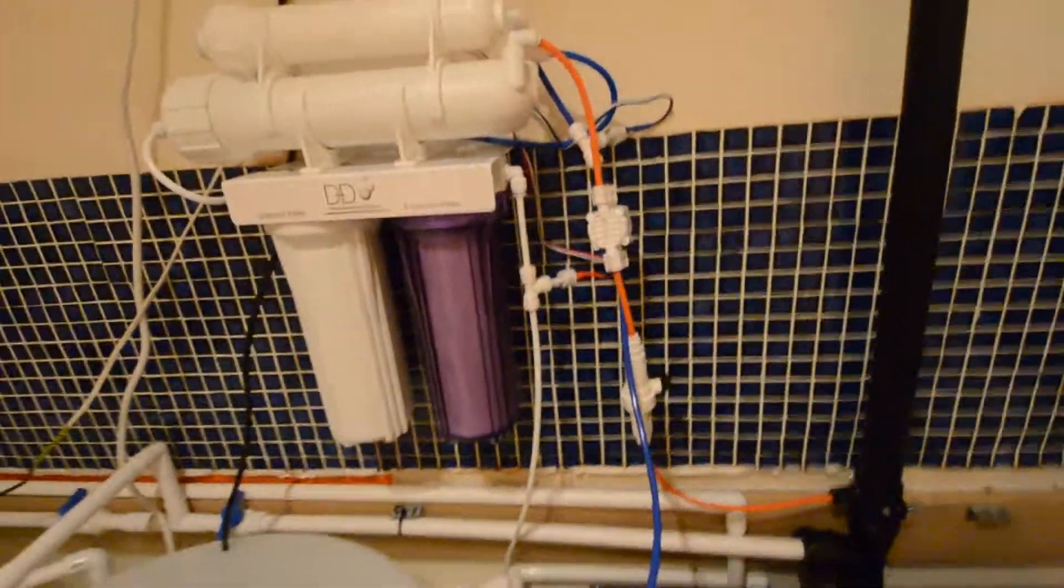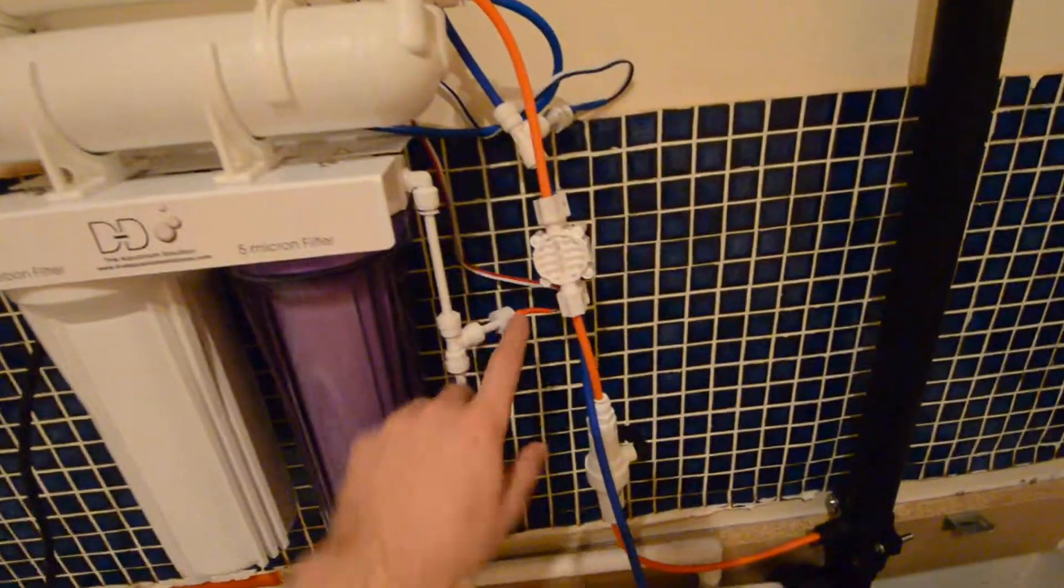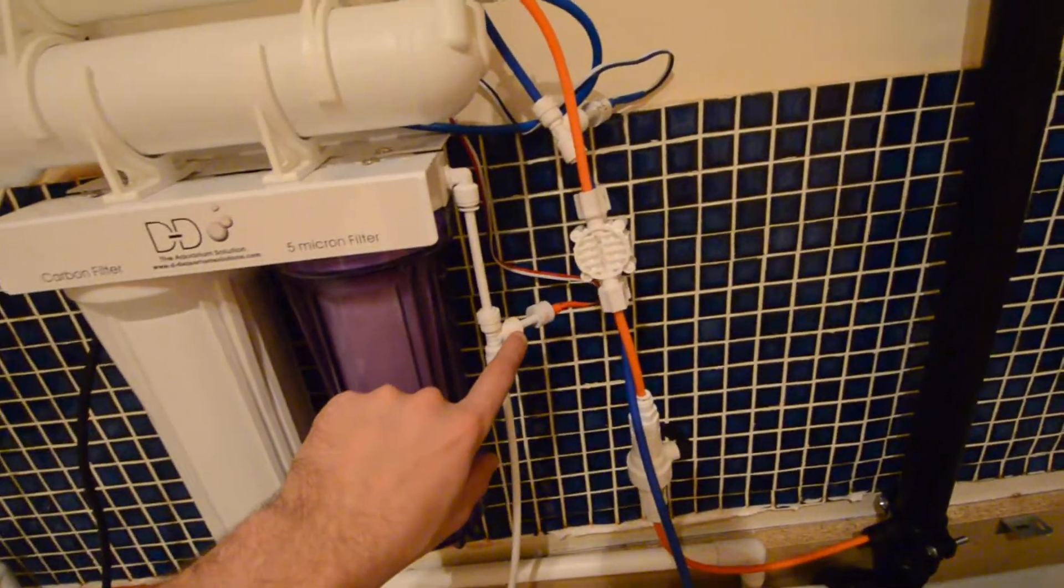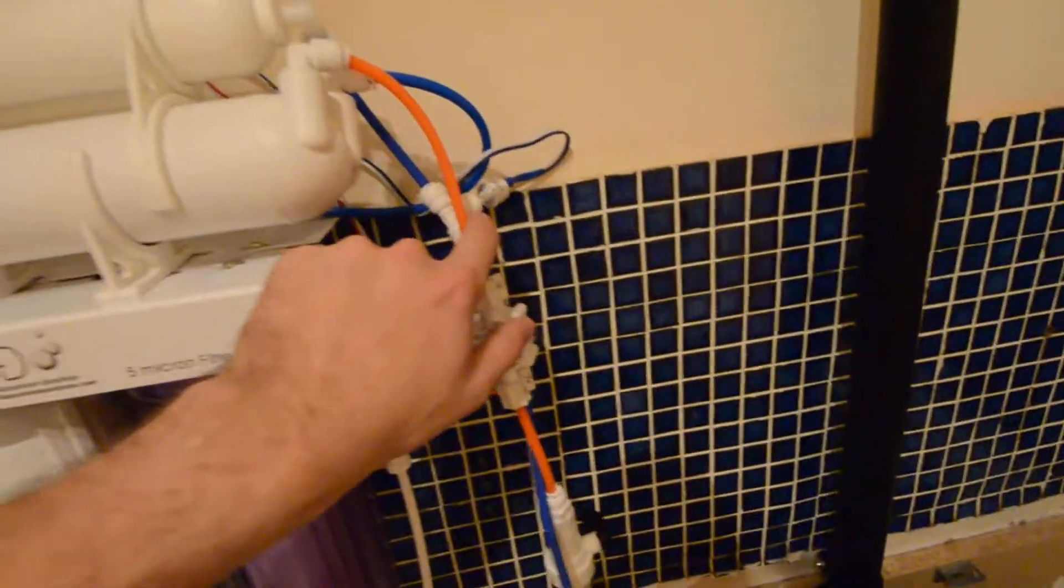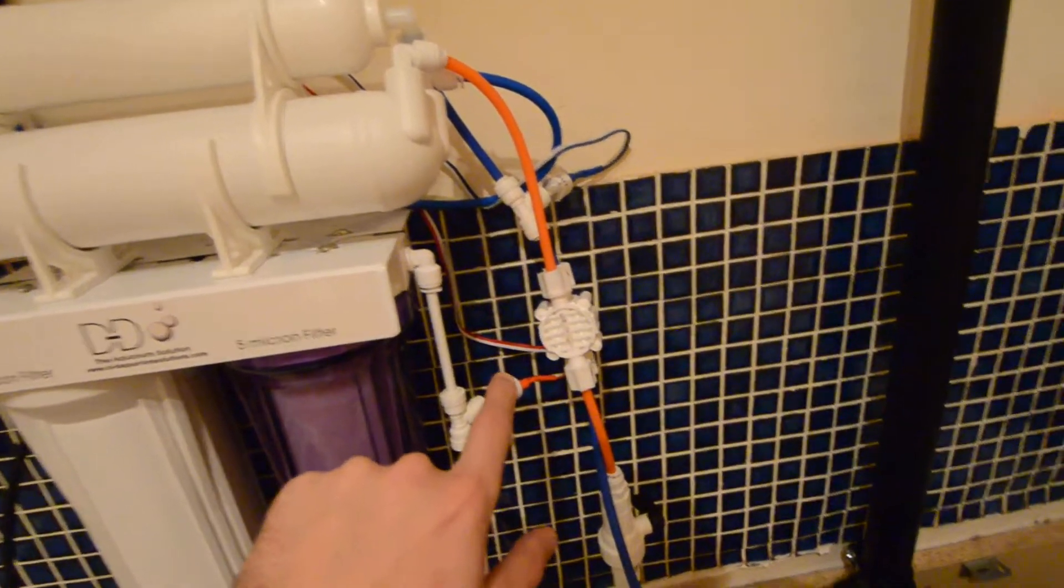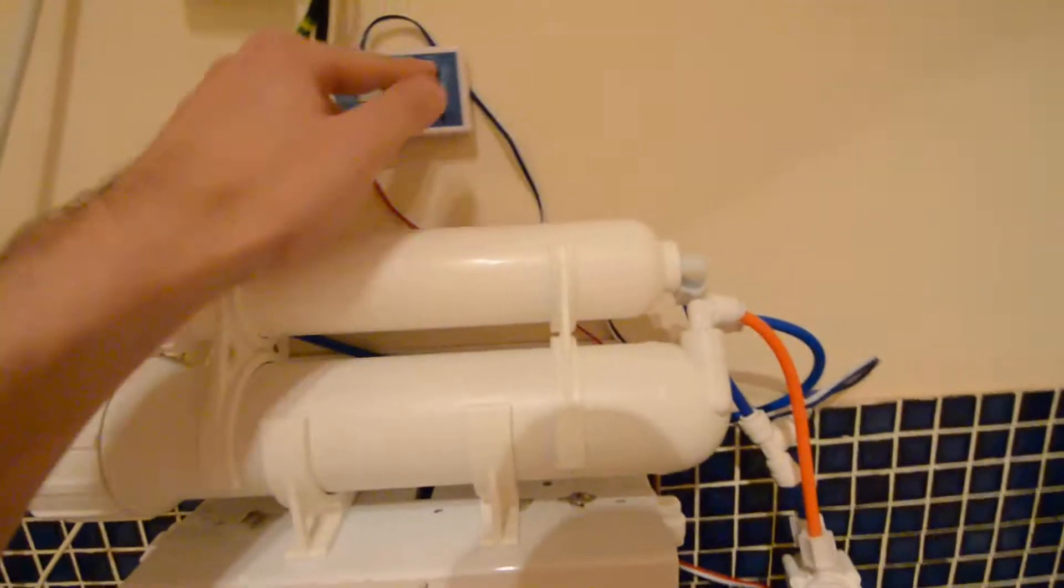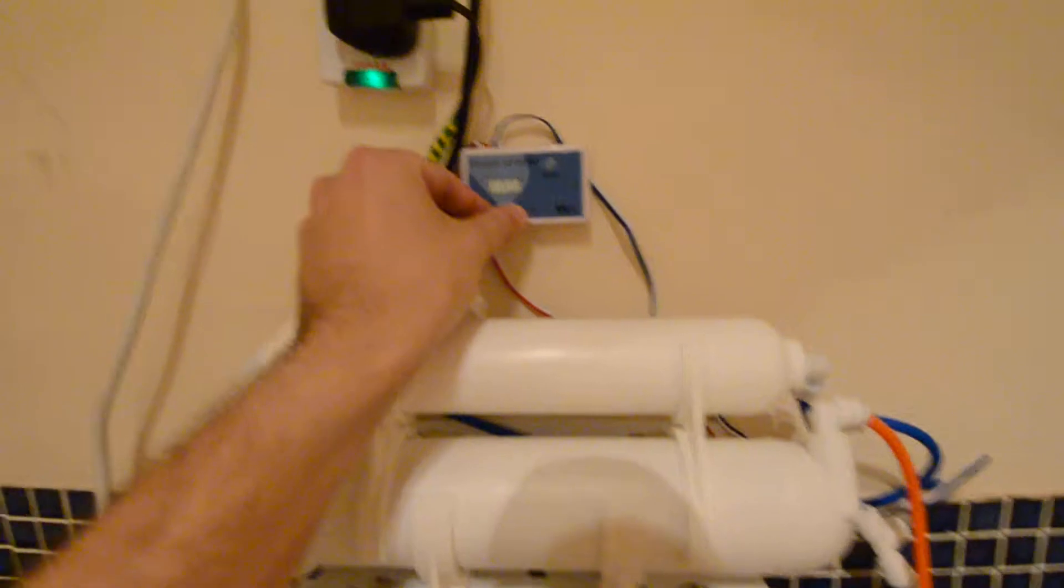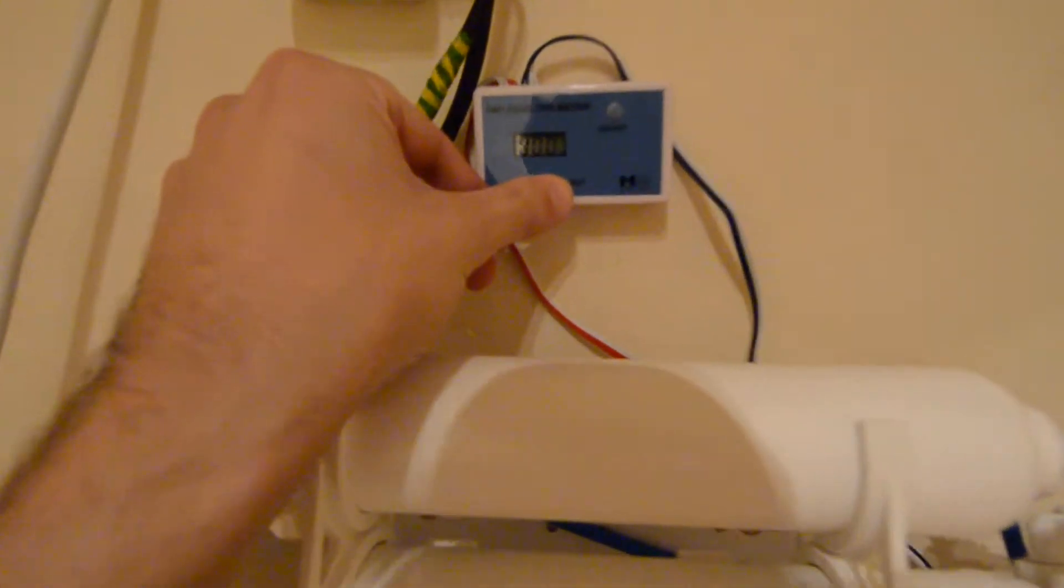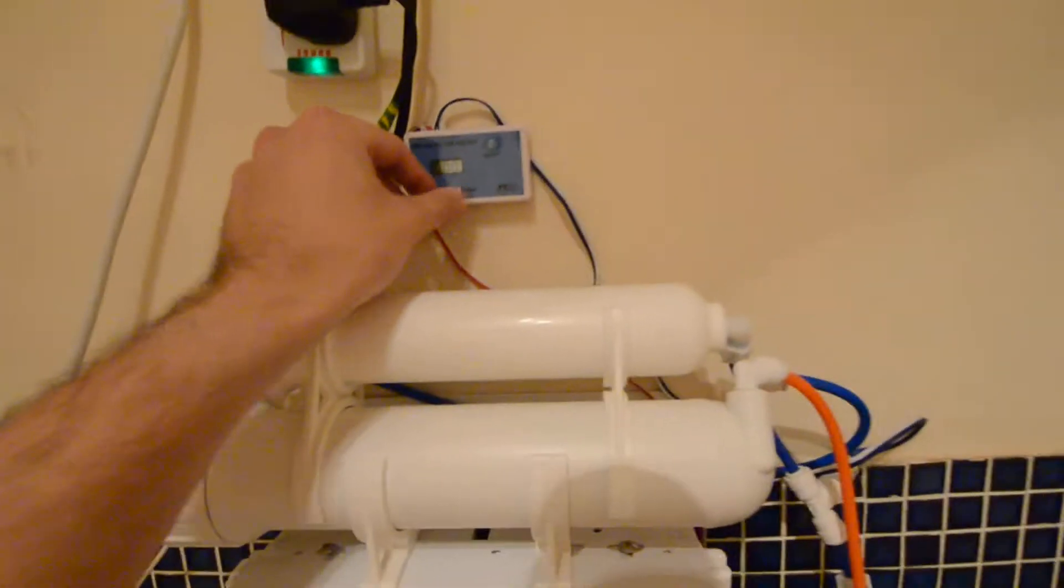Now what I've also installed here is this little probe on the inlet here and a little probe on the outlet there. Now basically that's connected to this TDS meter which is reading zero, which is what I want—zero TDS going into this tank.